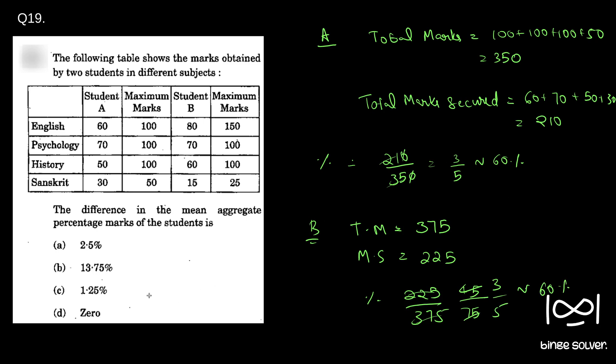So both are same. So the aggregate percentage marks, the mean difference in mean aggregate percentage marks of students is 0. So the answer is D. Answer to question 19 is D, zero. That is the solution to question 19.